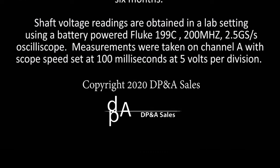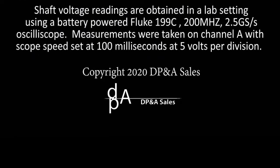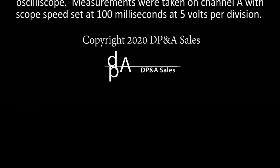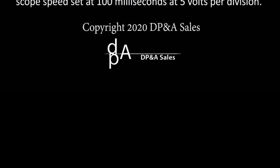Shaft voltage readings are obtained in a lab setting using a battery powered Fluke 199C 200 megahertz oscilloscope. Measurements were taken on channel A with scope speed set at 100 milliseconds at 5 volts per division.